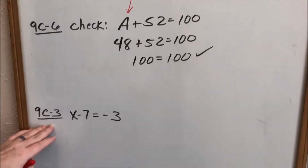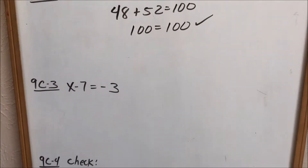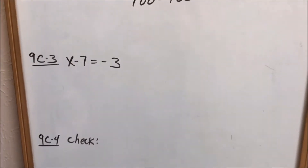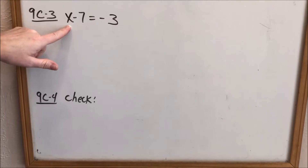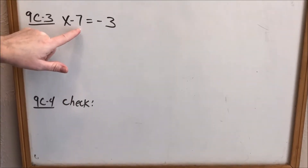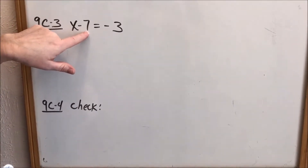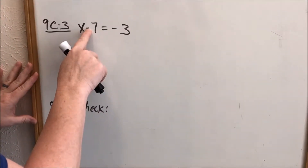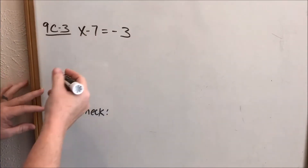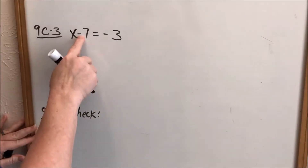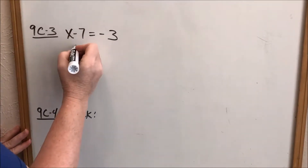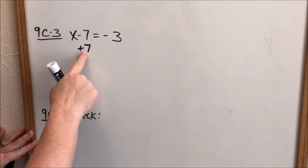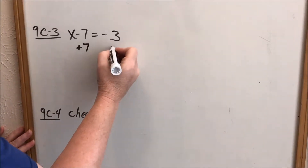Let's look at 9C number three. Same thing — our goal is to get letters on one side and numbers on the other side. I usually get letters on the left-hand side, which means I want my numbers on the right. I want that number to go away. It's being subtracted — it's a negative 7. The opposite of negative is positive, so I have to add 7 for that to go away. Whatever I do to one side of the equal sign, I have to do to the other side.